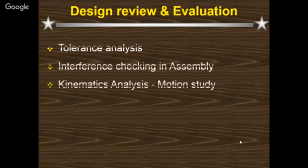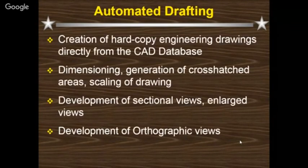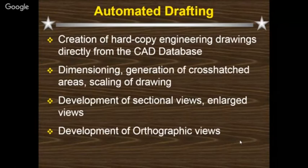Design review and evaluation includes tolerance analysis, interference checking in assembly, and kinematic assembly motion study. The last application is automated drafting — creation of hard copy engineering drawings, dimensioning, generation of cross-hatched areas, and scalings. Whatever drawings were done through manual drafting, the same can be done using software like AutoCAD, MDT, or Inventor. Sectional views, enlarged views, cross-hatched views, development of orthogonal views, and isometric views are all possible.